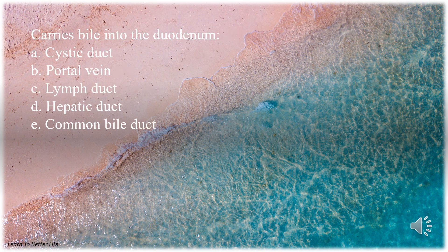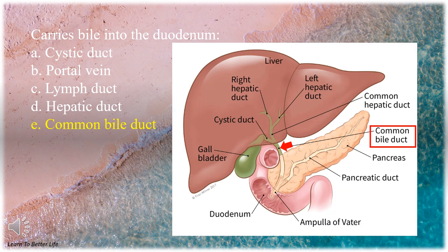Carries bile into the duodenum. A. Cystic duct. B. Portal vein. C. Lymph duct. D. Hepatic duct. E. Common bile duct. The answer is E. Common bile duct.